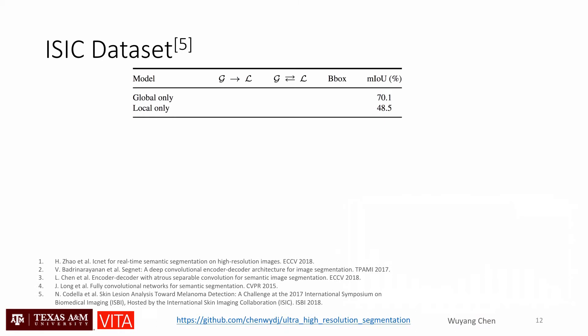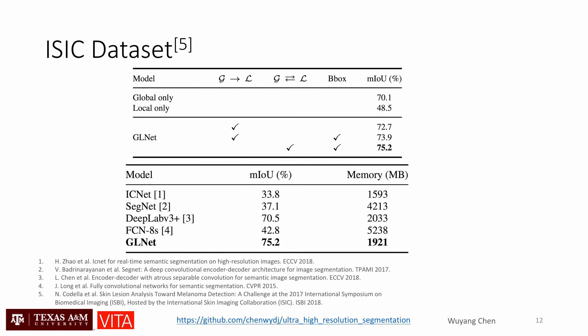A histogram shows that the imbalanced foreground-background ratio, shown by the red bars, is successfully shifted to balanced blue bars. The ablation study on the iSAID dataset proves that with bounding box-aided coarse-to-fine segmentation, our GLNet achieves the best results and still maintains the best accuracy and memory trade-off.